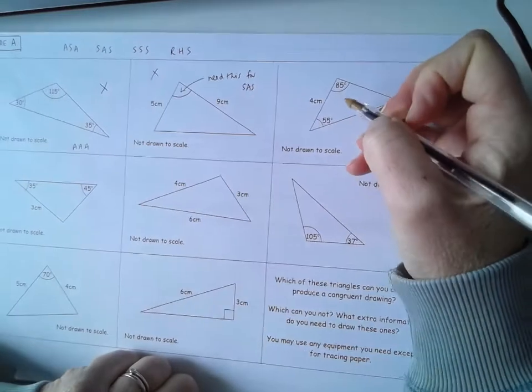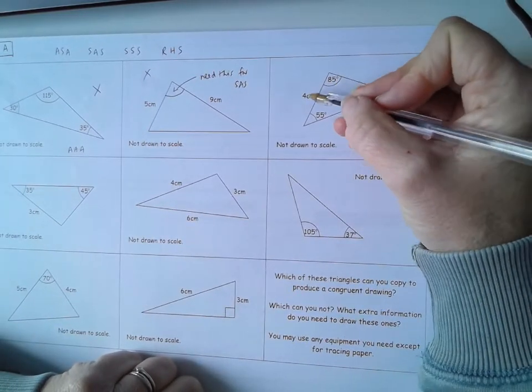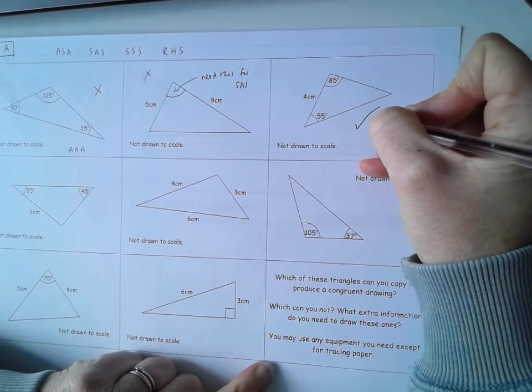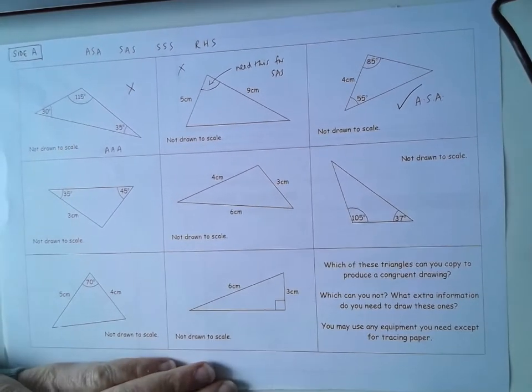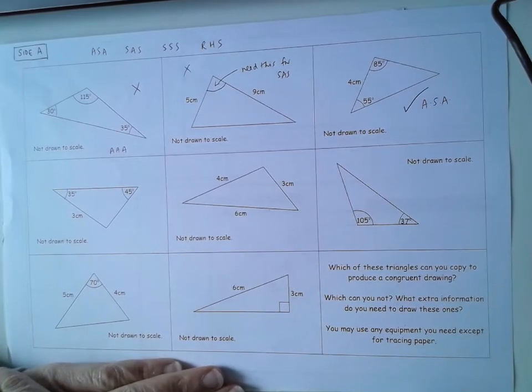This one here, this is looking more promising. We have an angle, a side and an angle. Yes, so we could copy that. There's only one triangle that would have an 85 degree angle, a 4 centimeter side and then a 55 degree angle. So that one's okay. That's angle, side, angle.